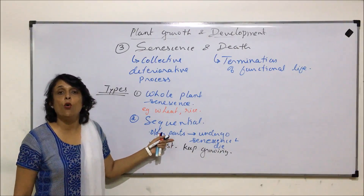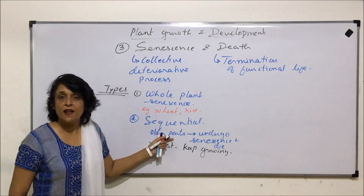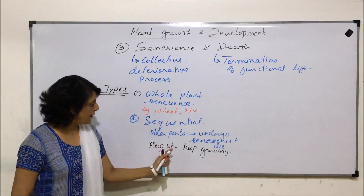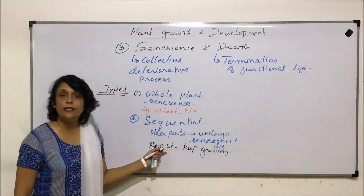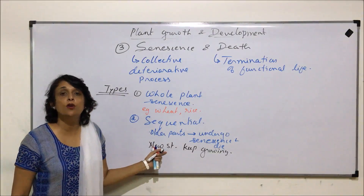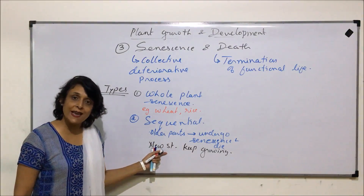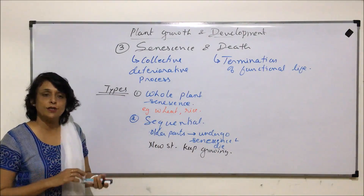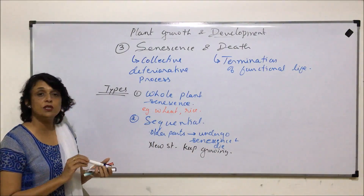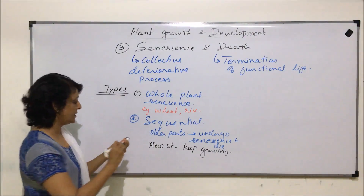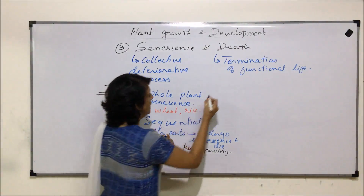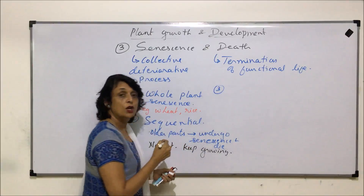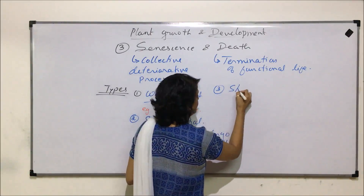Sequential senescence is the most common type of senescence, which we see in perennial plants. In perennial plants, the older leaves turn yellow and fall off, and the newer leaves keep growing on the same plant. So there is a sequential senescence taking place.